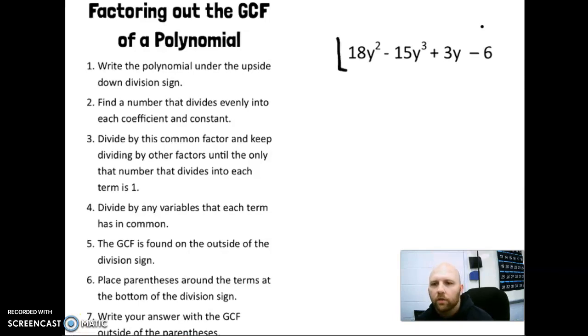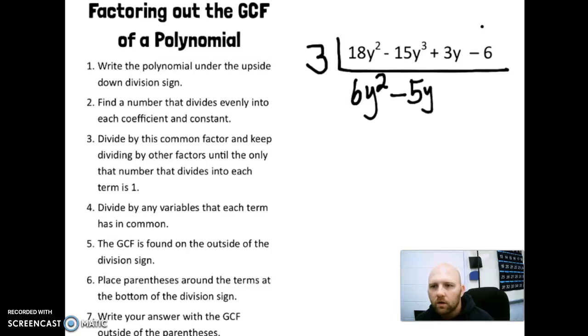It looks like we can divide 3 into those, so we're going to divide by 3. 18 divided by 3 is 6y². Negative 15y³ divided by 3 would be negative 5y³. And 3y divided by 3 would just be y. And negative 6 divided by 3 would be negative 2.